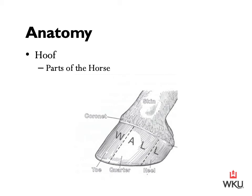A horse's hoof continuously grows down from the coronary band or the coronet. A young horse's hoof grows much faster than a mature horse's, but a mature horse's hoof grows one-fourth to three-eighths of an inch per month. An adult horse will completely grow out the toes within a year and the heels within four to five months. Hoof grows at different rates throughout the year depending on the season and climate to which our horses are exposed.